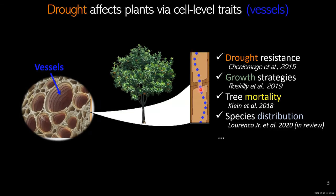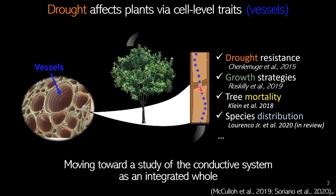Beyond drought resistance, this investigation also informs growth strategies — fast and slow — as well as tree mortality. We can also understand species distribution based on these cellular traits, as there appears to be trait selection in the community across environmental gradients. This scaling-up approach is strongly encouraged in the research field because we need to move toward studying the conductive system as an integrative role — not just at the cell level, but relating it to the plant level.